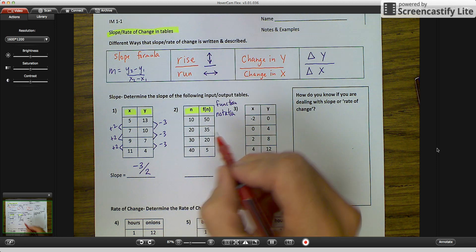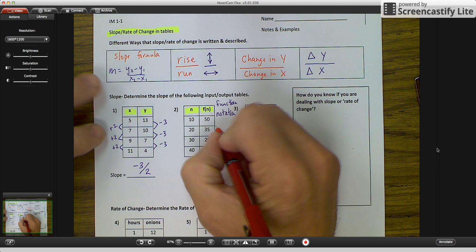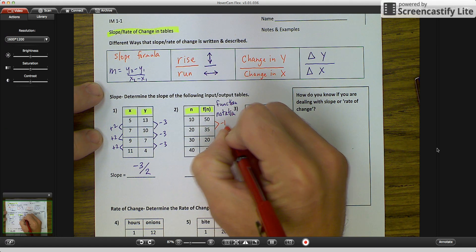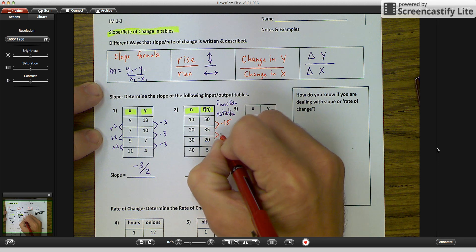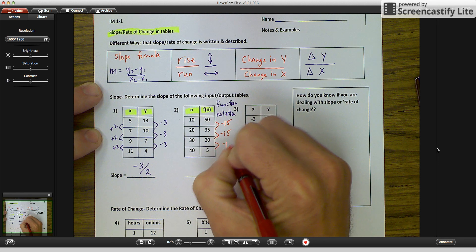As I look at the second table, we have 50 to 35, negative 15. 35 to 20, negative 15. 20 to 5, negative 15.